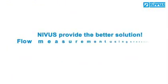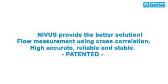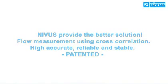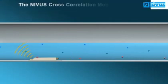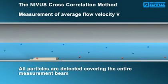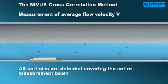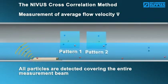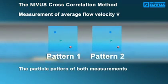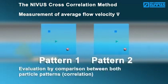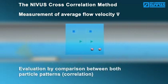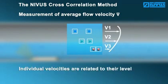NIVUS provides the better solution: flow measurement using cross-correlation — high, accurate, reliable and stable. The NIVUS cross-correlation method is not a spot velocity measurement. Here all particles are detected at the same time covering the entire measurement beam. The particle images are evaluated by comparing correlation to each other. This comparison repeats within a few milliseconds. In addition to the individual particle velocities, the relation to the flow level is available. Due to this, it is possible to represent the flow profile directly.